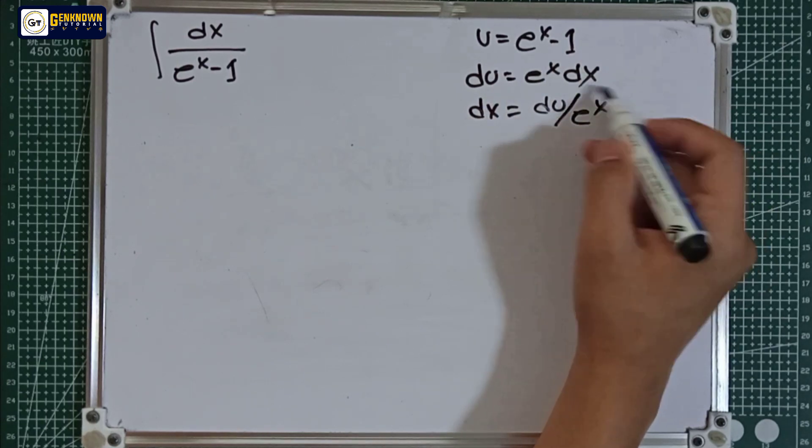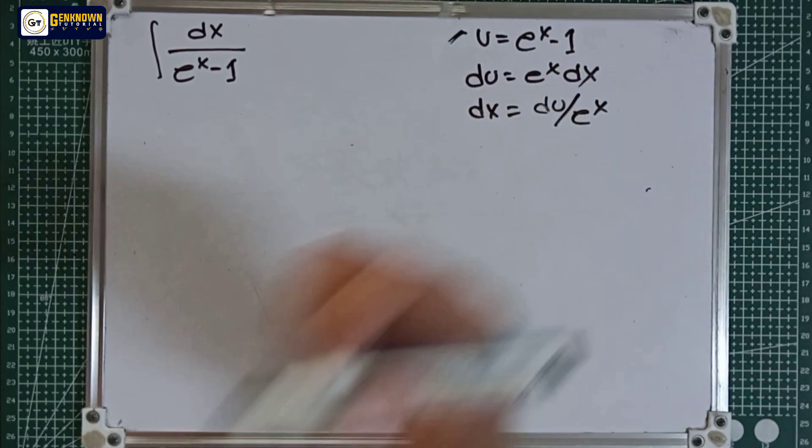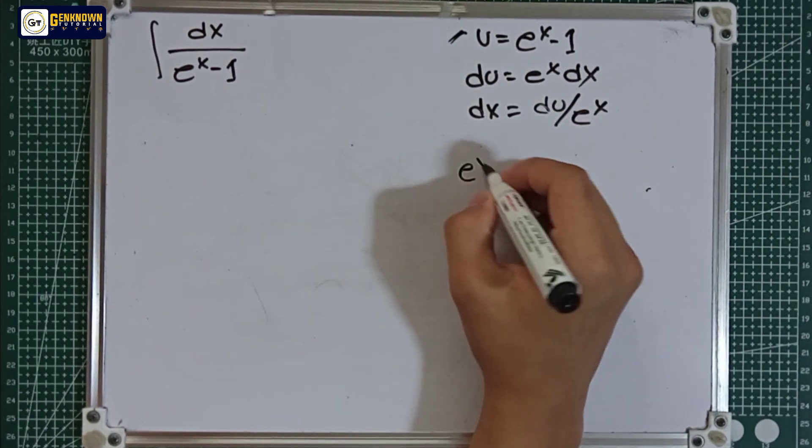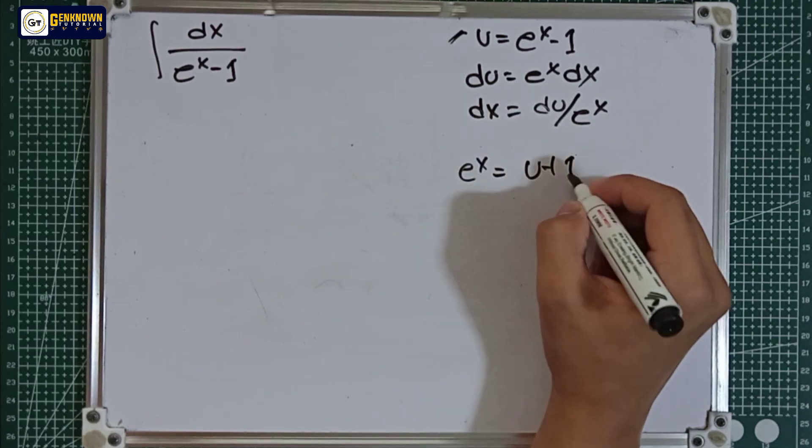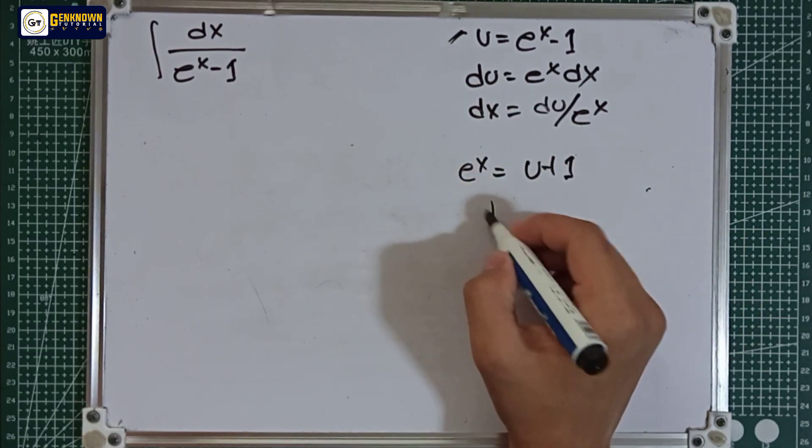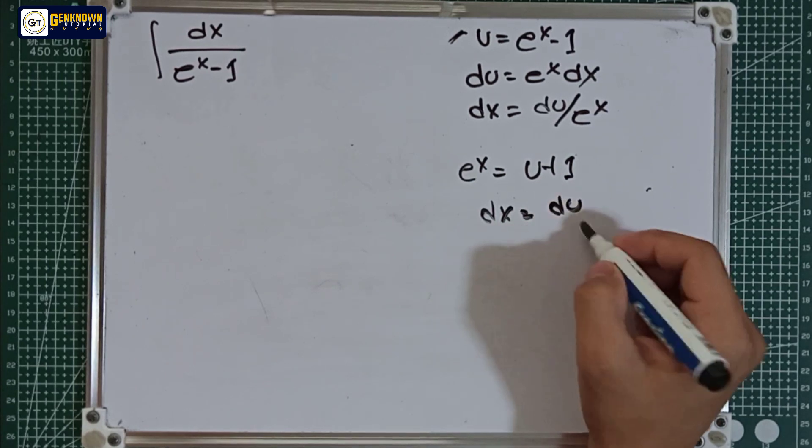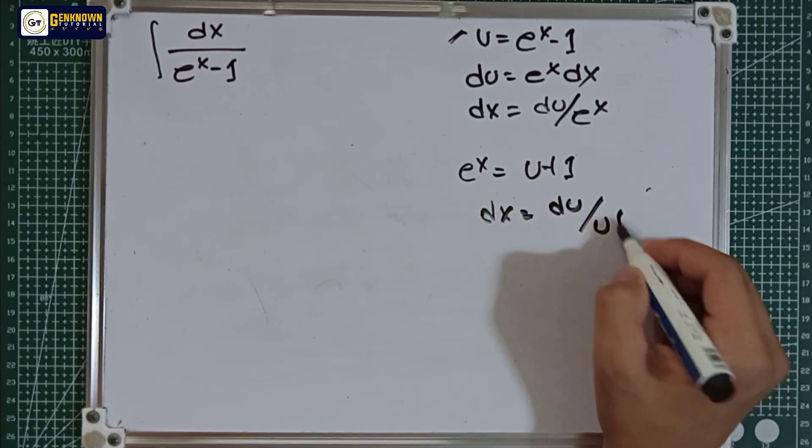And the value of e raised to x, we get from here, which is e^x is equal to u plus 1. Finally, we have dx is equal to du over u plus 1.